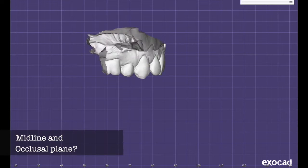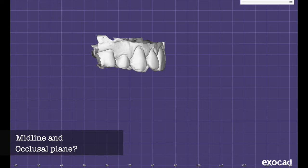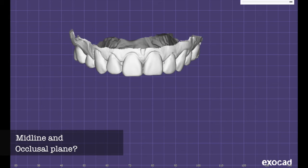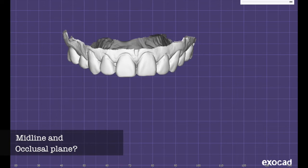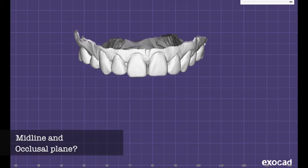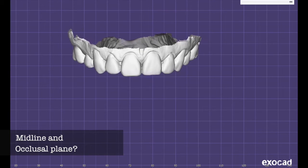One of the most common problems with CAD techniques is model orientation in space. Whether anteroposterior or frontal canting can mess up a whole rehabilitation, identifying the midline and occlusal plane is fundamental in aesthetic dentistry.